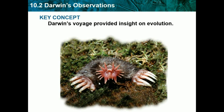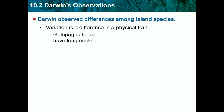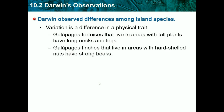Our key concept for 10.2, Darwin's observations, is that Darwin's voyage provides insight on evolution. Darwin visited the Galapagos Islands and made a bunch of theories of evolution. Darwin observed differences among island species. Variation is the difference in physical traits — basically the difference between everybody in the world. Galapagos tortoises that live in areas with tall plants have long necks and long legs. Galapagos finches that live in areas with hard-shelled nuts have strong beaks. He explored different regions of the islands and discovered the different adaptations these animals have.